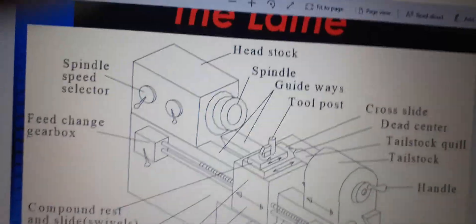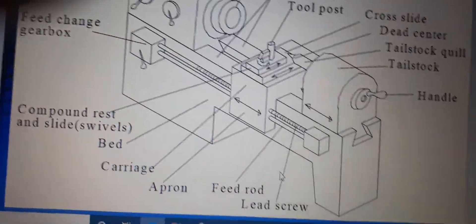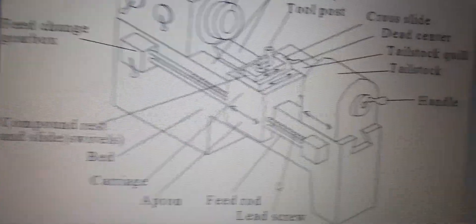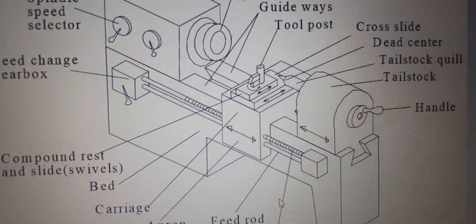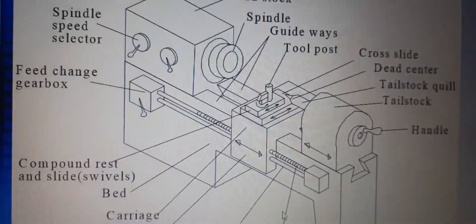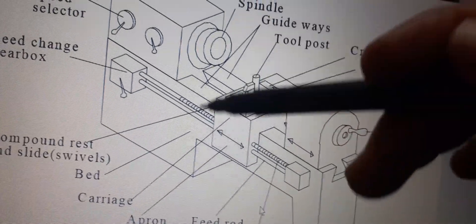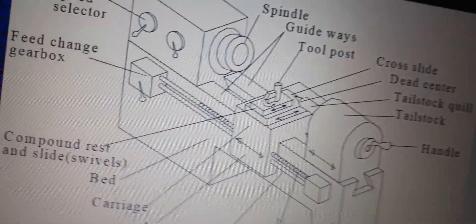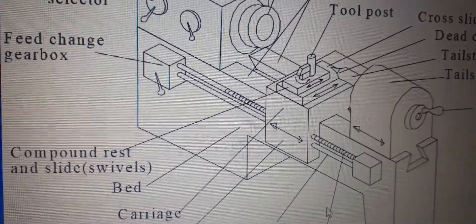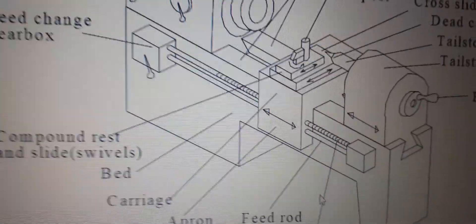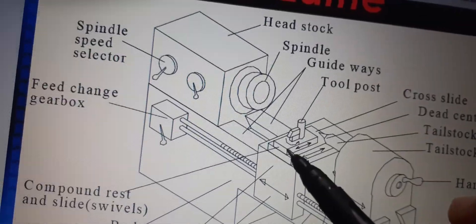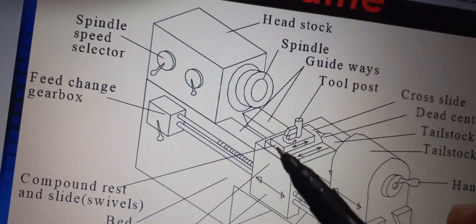The saddle is an H- or U-shaped rigid casting sliding over the bed guideways. The cross slide is fitted at the top of the saddle and supports the compound rest. You can see the compound rest and the saddle in the figure.